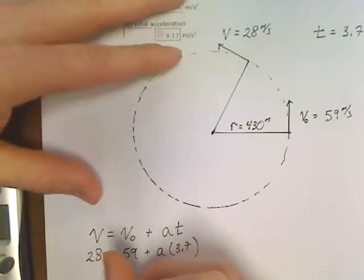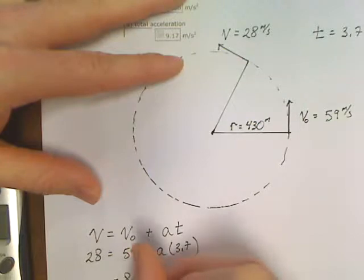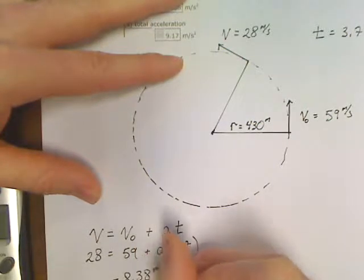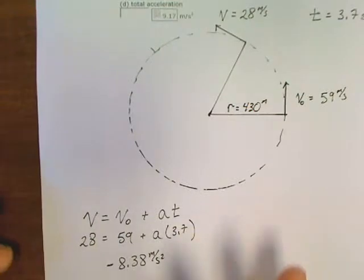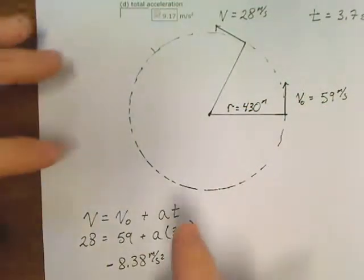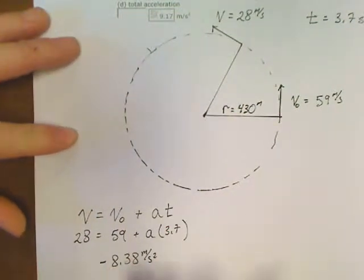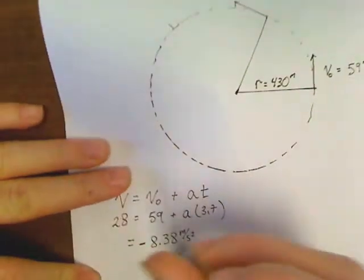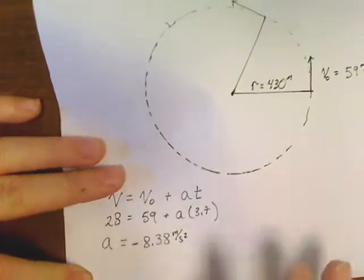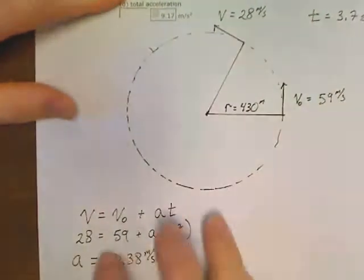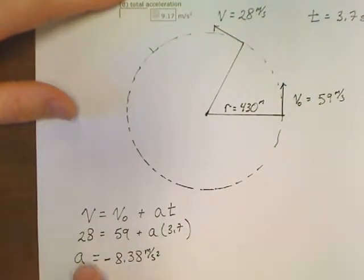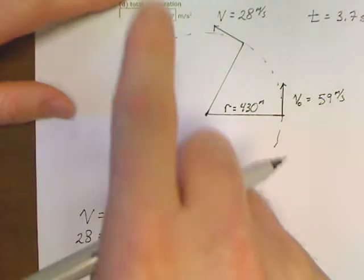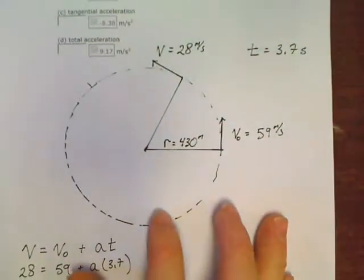So, we've got a negative 8.38 meter per second squared acceleration. Now, notice something. This is a plain old acceleration, as in this is an, this is important. This is just an a. So, this is not an ac. This is just a plain old fashioned acceleration. Nothing new that we've done here.